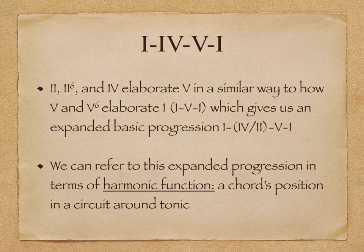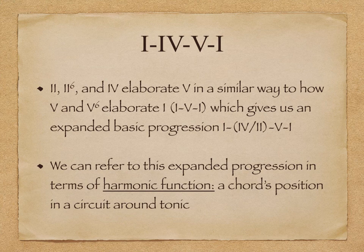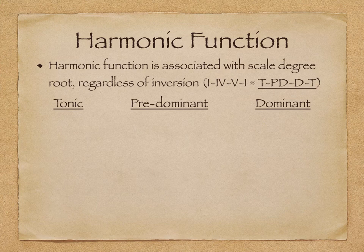So we can now expand that progression to 1-4-5-1, or 1-2-5-1. We can refer to each of the chords in this progression in terms of their harmonic function — that is, a chord's position in a circuit around a tonic. Harmonic function is associated with a chord's scale degree root, regardless of the inversion that it appears in.